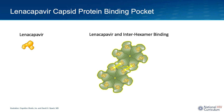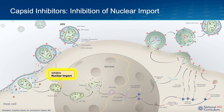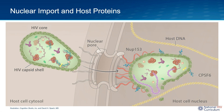The overall hyperstabilization of the capsid lattice is thought to be the most important aspect of linacapavir's antiviral activity. Now let's explore the multi-stage mechanism of action of the HIV capsid inhibitors in more detail. Let's first look at how the HIV capsid inhibitors impact the nuclear import of the HIV core. Nuclear import refers to the movement of the HIV core through the host cell nuclear pore. This process is facilitated by the interaction of the HIV capsid shell with host proteins, most notably the nuclear porin protein 153 (NUP153) and the cleavage and polyadenylation specificity factor 6 (CPSF6).